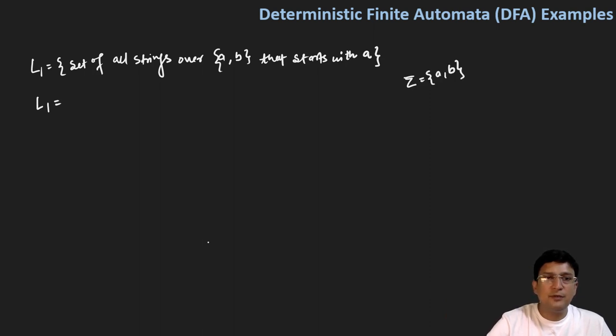And all those strings should start with A. For example, the smallest string that starts with A will be just 'a'. And then AA is also a string that starts with A, then AB is also a string that starts with A, then AAA, then ABB, and so on. That means this language is an infinite language.